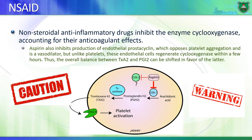Previously in introductory biochemistry we talked about the action of aspirin on the synthesis of eicosanoids - specifically prostaglandins and thromboxanes. What aspirin does is inhibit the enzyme cyclooxygenase, preventing the production of prostaglandins and thromboxanes. Aspirin is beneficial in reducing the incidence of myocardial infarction because it reduces platelet aggregation and vasoconstriction.